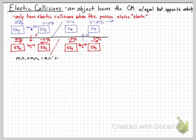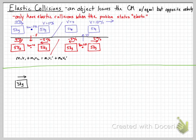If we were just to calculate it the standard way, we'd use M1V1 + M2V2 = M1V1' + M2V2'. With two unknown variables V1' and V2', there's another way using conservation of energy, but that takes about half a page of algebraic work. Using the center of mass and the drop, flop, and add method is much quicker and less algebra-intensive.